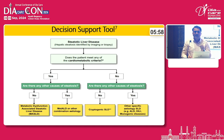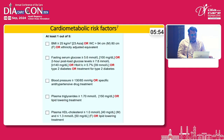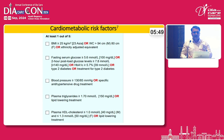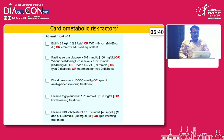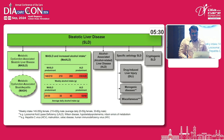One more term is MetALD — metabolic dysfunction associated with an alcoholic component as well. The five cardiometabolic risk factors are the same five criteria for metabolic syndrome. When three of them are present we label the patient as having metabolic syndrome, but any one of these risk factors present along with imaging or biopsy-diagnosed steatosis means we label that as MASLD.